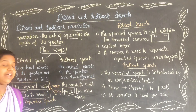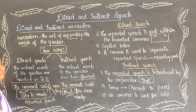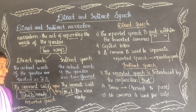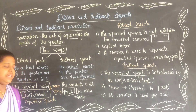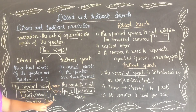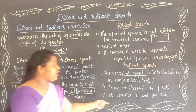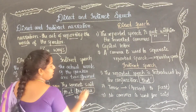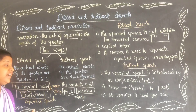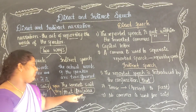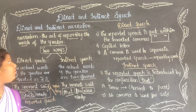The tense changes — 'is' in present tense changes into 'was' in past tense. No comma is used after 'said' in indirect speech. In direct speech we use a comma, but in indirect speech we use the conjunction 'that'. The servant said that tea was ready.